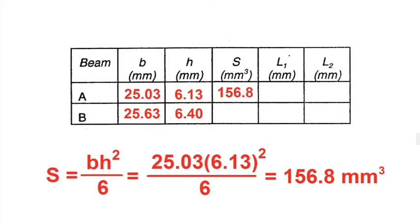Now calculate the section modulus of each beam. This is simply the width times the square of the thickness divided by six.